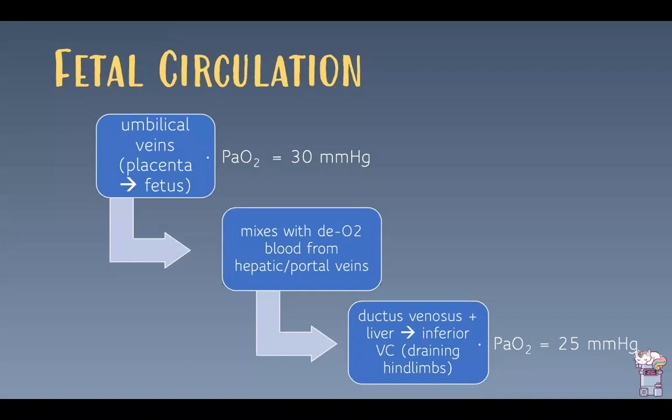In fetal circulation, umbilical veins take blood from the placenta to the fetus. This blood is actually fairly hypoxic — the partial pressure of oxygen is less than half of what a normal adult has in their arteries. The highest PaO2 within fetal circulation is only 30 mmHg, whereas a normal awake adult mammal has an arterial PaO2 between 80 and 100 mmHg. The fetus is adapted to this hypoxic environment.